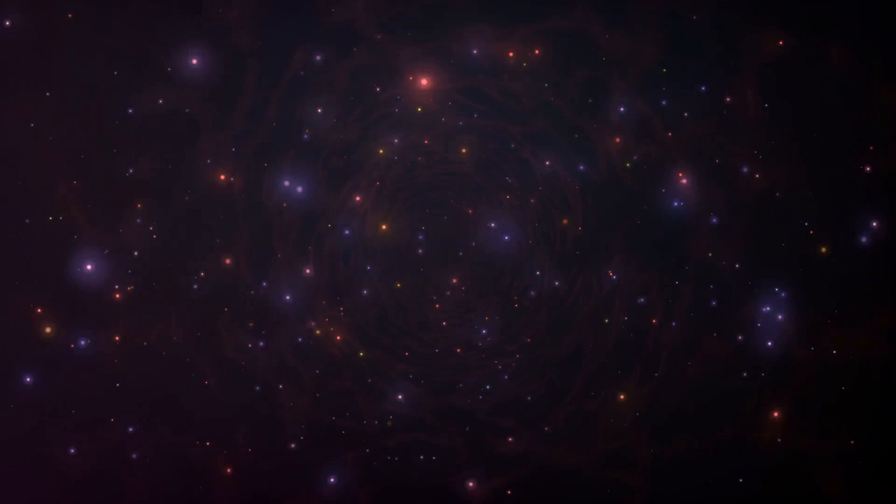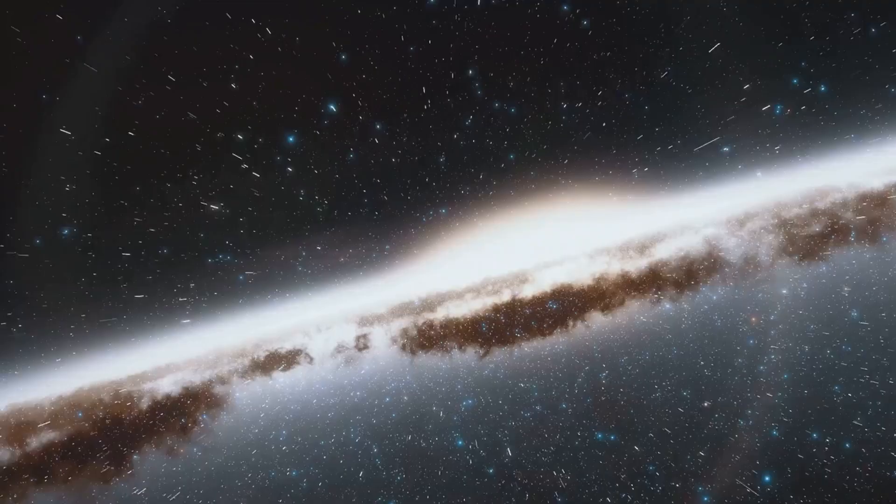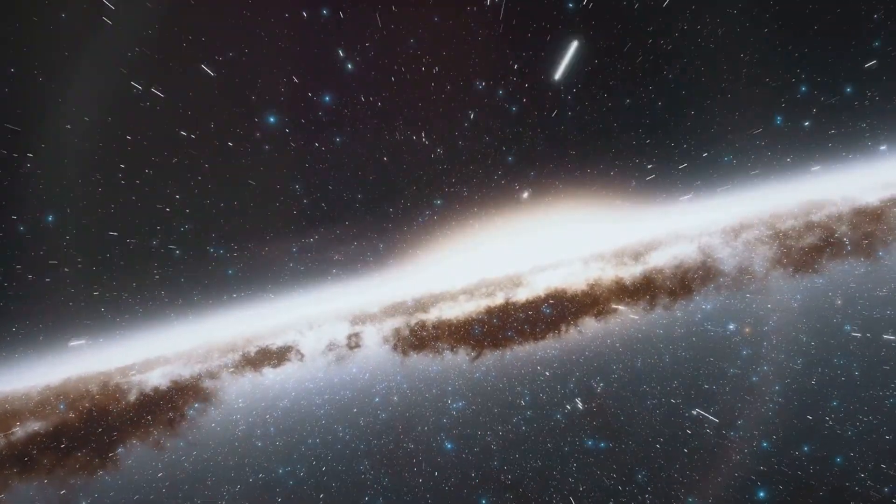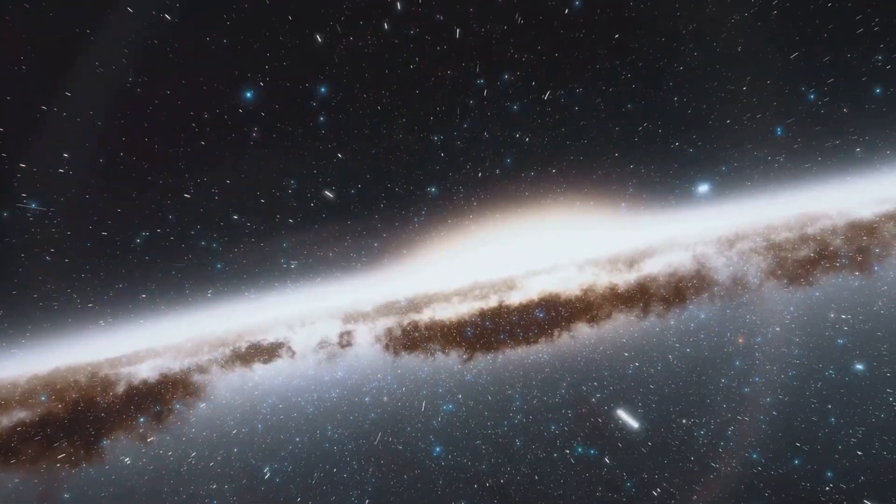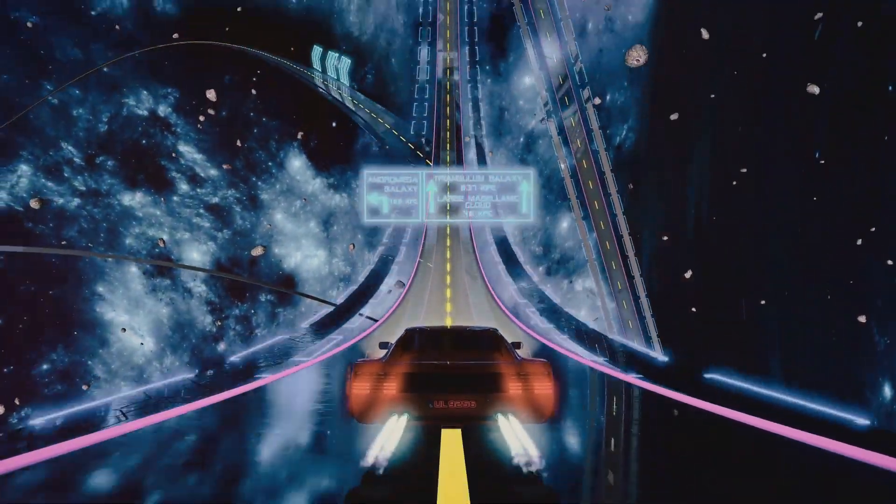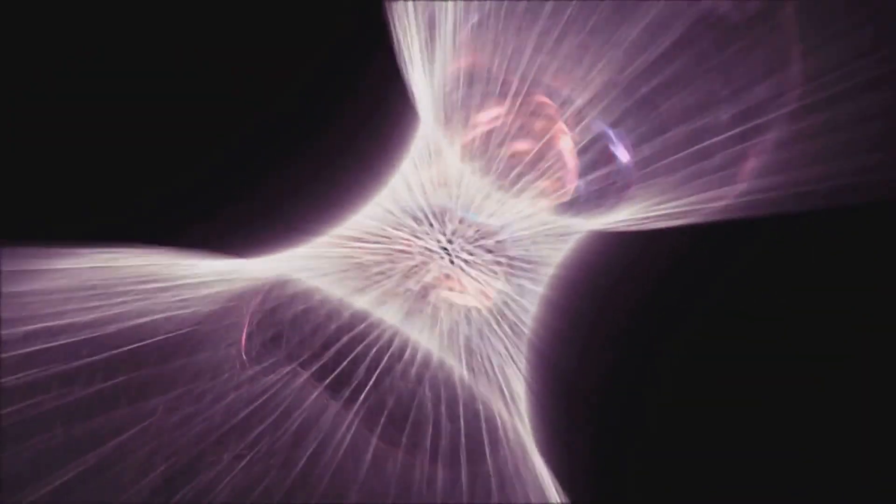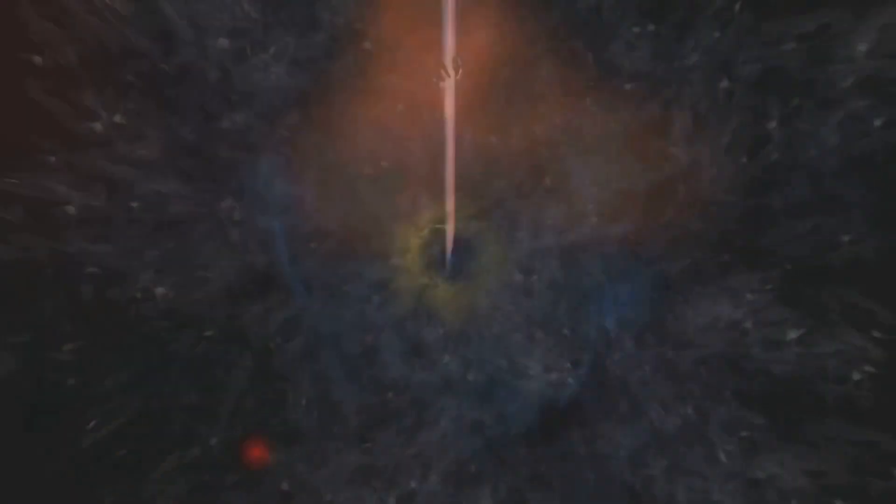Imagine a detective story. The universe is our crime scene. We see stars swirling in galaxies moving much faster than they should. It's like finding a speeding car with no driver. Something unseen must be providing the extra gravity to keep things from flying apart. That something is what we call dark matter.